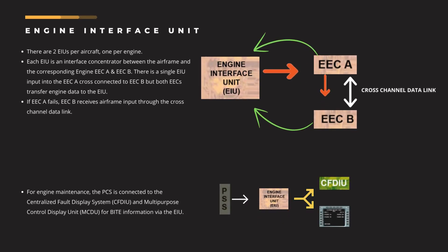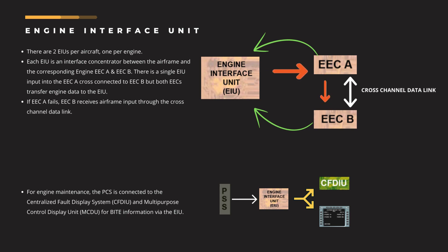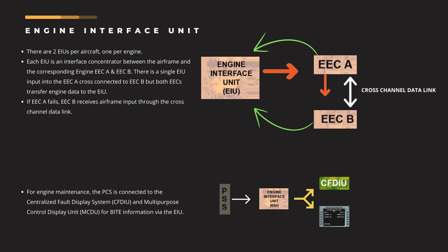First, we will talk about the Engine Interface Unit. There are two EIUs per aircraft, one per engine. The EIU ensures the segregation of the two engines and aircraft electrical power supply to the FADEC. Each EIU is an interface concentrator between the airframe and the corresponding engine EEC-A and EEC-B. There is a single EIU input into EEC-A, and EEC-A is cross-connected with EEC-B, but both EECs transfer engine data to the EIU.